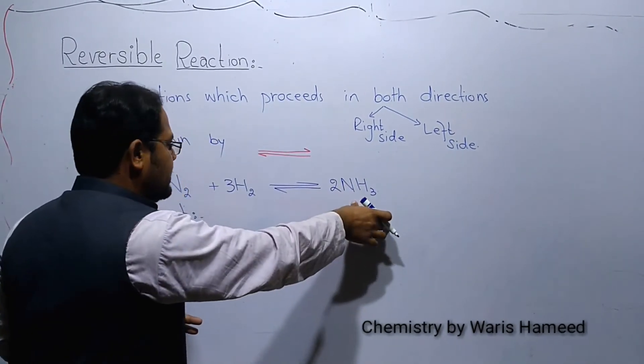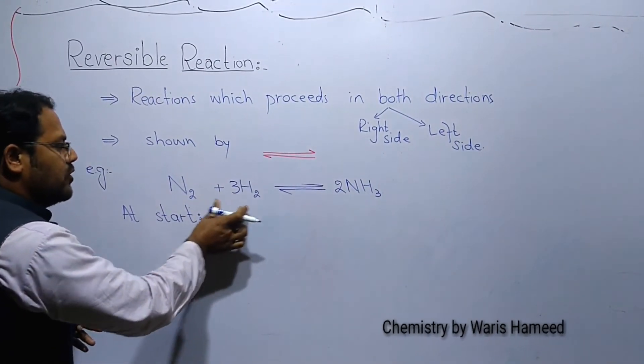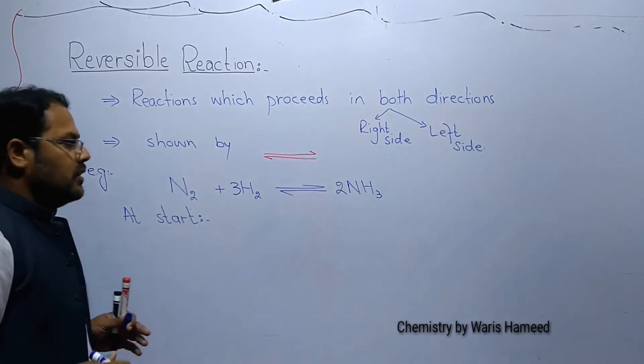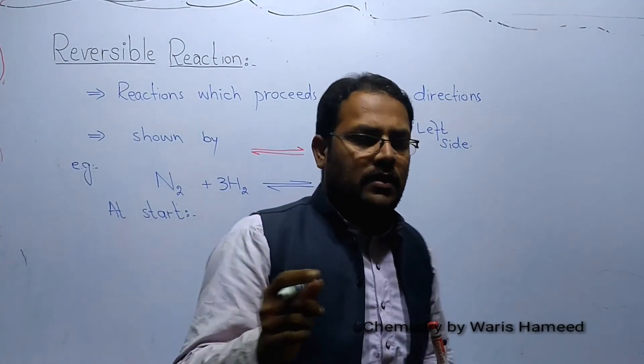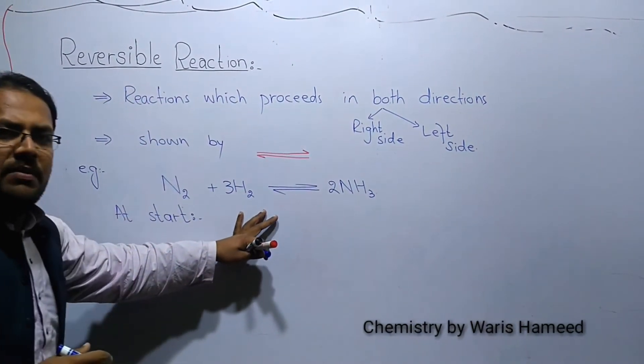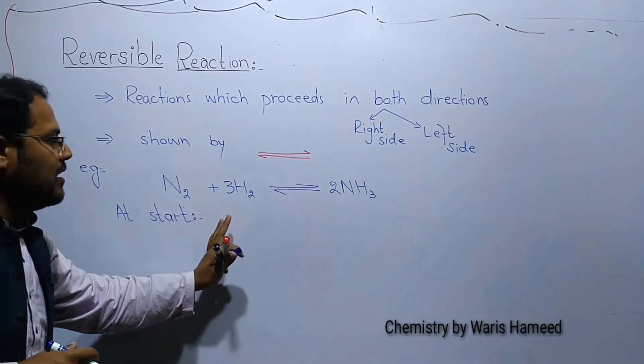After some time, ammonia decomposes and again forms hydrogen and nitrogen. This occurs in the reverse direction. At equilibrium state, there is both forward and reverse reaction.